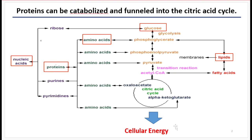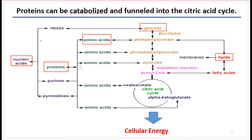However, glucose doesn't necessarily represent the only high-energy molecule that can be oxidized to produce ATP. Amino acids can be oxidized and turned into one of the intermediates of glycolysis, or they can be oxidized and turned into pyruvate, or oxidized and turned into different intermediates of the citric acid cycle, thereby powering central metabolism. However, proteins have to first be broken down into amino acids before that can happen.